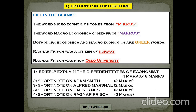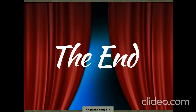Here are some questions you should practice: briefly explain the different types of economics for four or eight marks; write short notes on Adam Smith, Alfred Marshall, J.M. Keynes, and Ragnar Frisch respectively, each carrying two marks. I hope you like the video — please like the video and click the bell icon. Thank you!